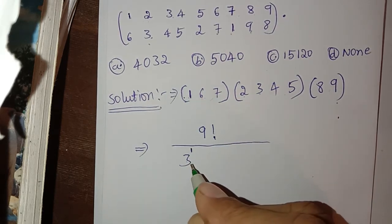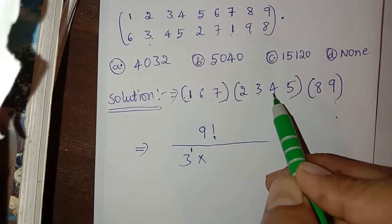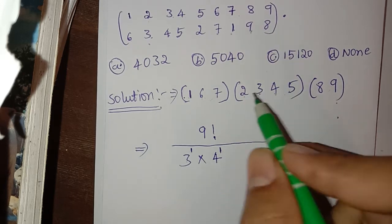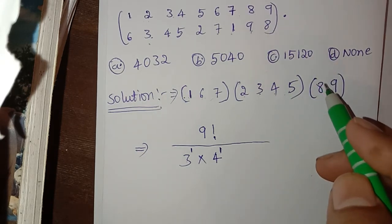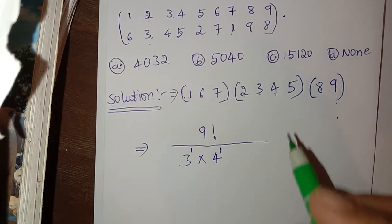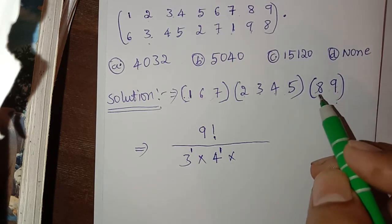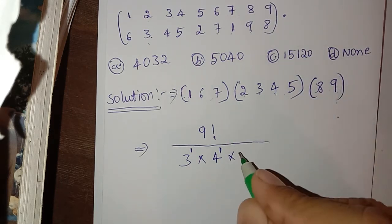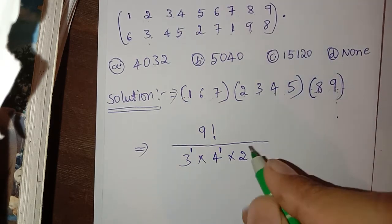So three raised to one. This next cycle contains one, two, three, four — four elements. So it is four raised to one because only one cycle is there which contains four elements. This last cycle contains only two elements, eight and nine, and there is only one cycle containing two elements. So two raised to one.